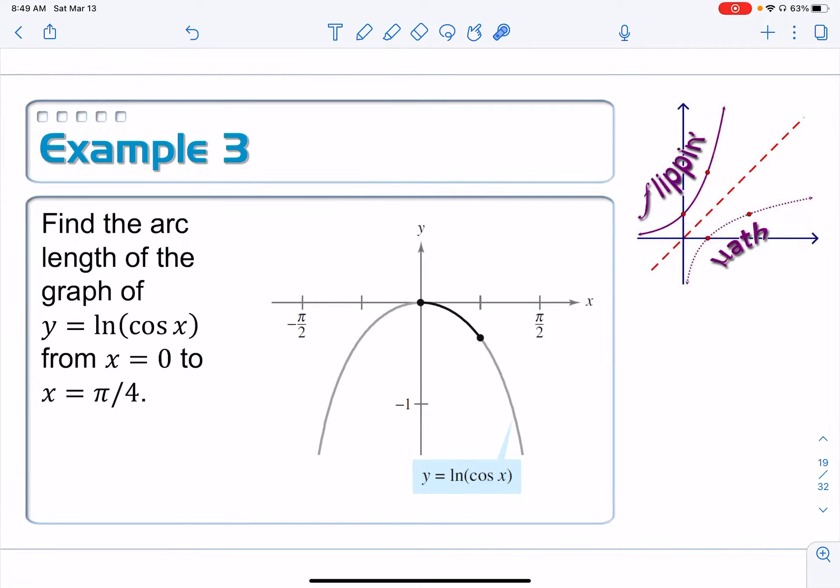Next up on example three, find the arc length of the graph of y equals the natural log cosine x from zero to pi over four.